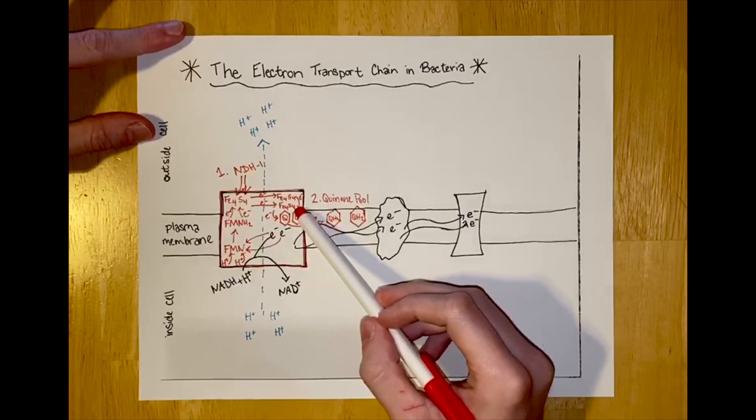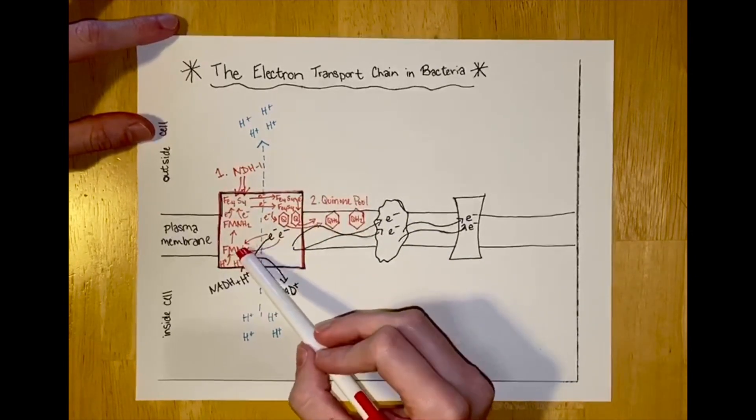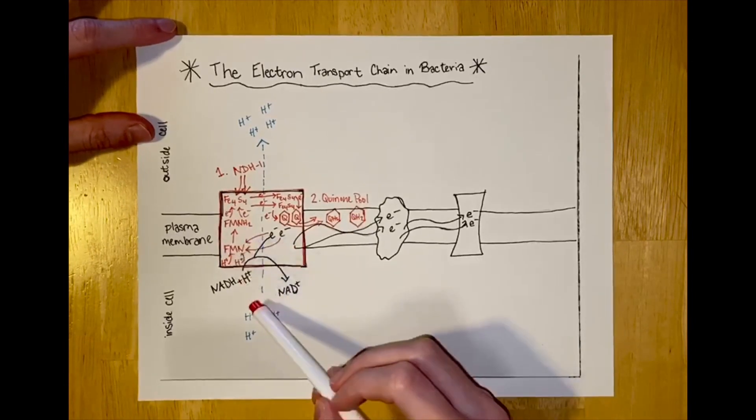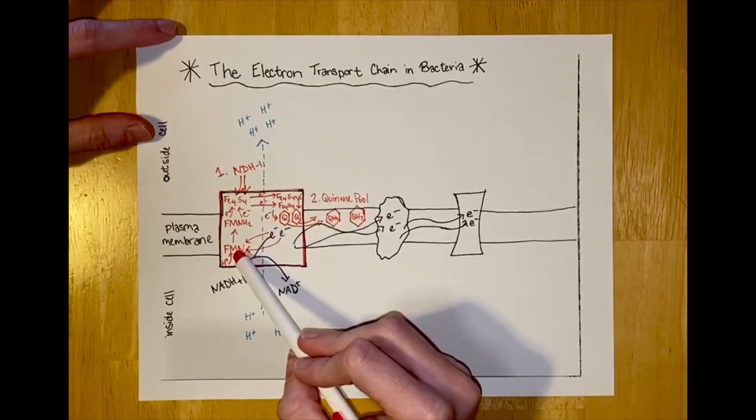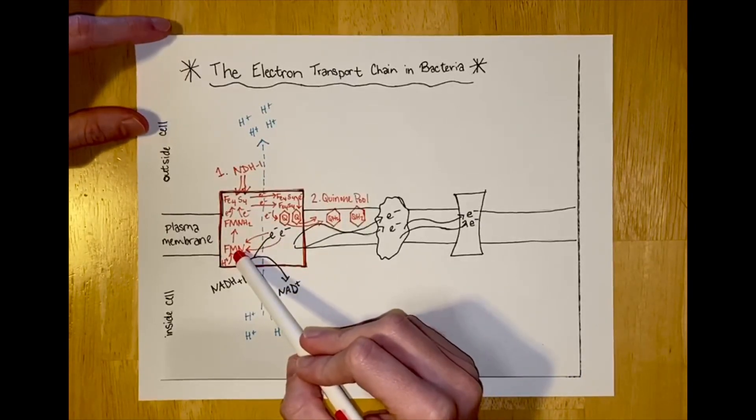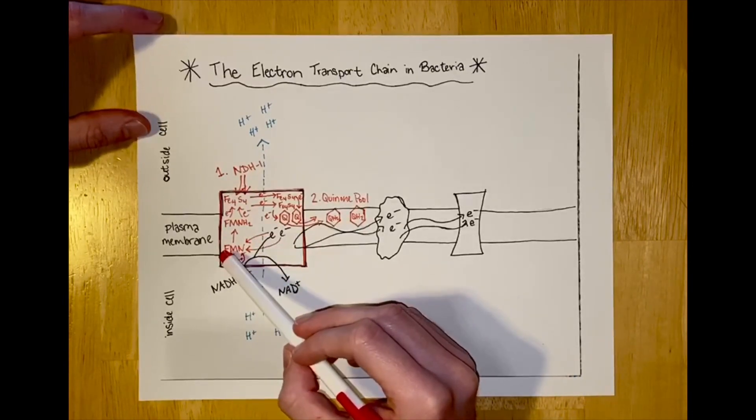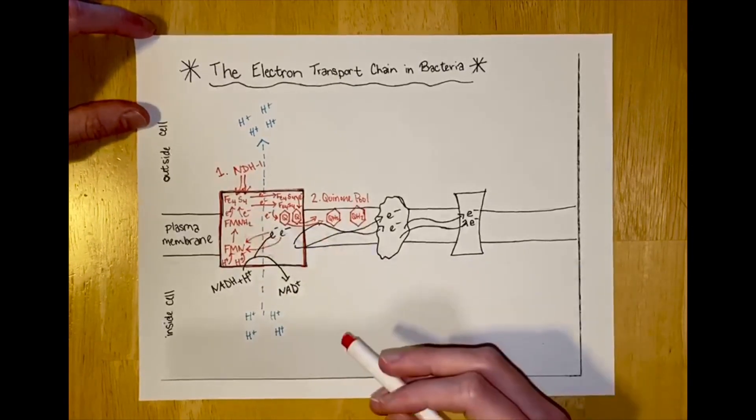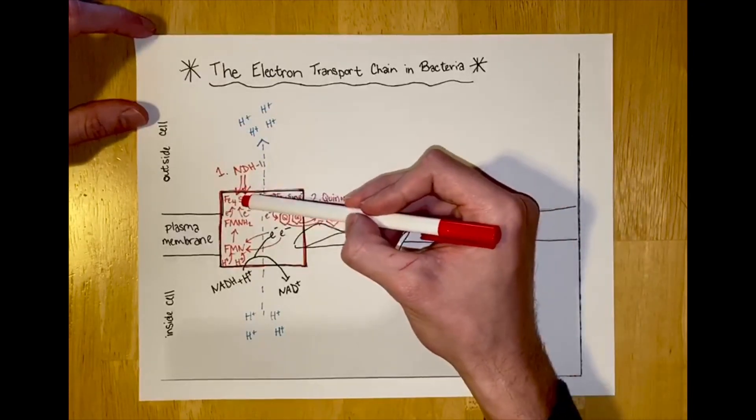This NDH1 has FMN or Flavin mononucleotide within it. The NADH2 donates two electrons to FMN and therefore reduces it. It requires two hydrogen protons to bind to the FMN in order to balance out its charge, making it into FMNH2. Also inside the NDH1 are iron sulfur centers known as Fe4S4.